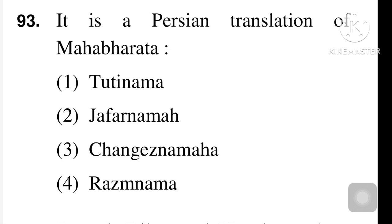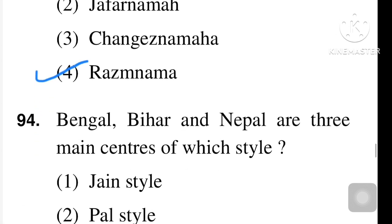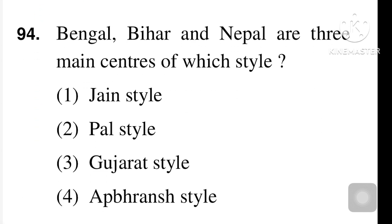Next question: it is a Persian translation of the Mahabharata. Four options on the screen — you can read them. The right answer is Rajmanama, option number four. Next question: Bengal, Bihar, and Nepal are three main centers of which school? Jain style, Pal style, Gujarat style, or Urban style. Option number two, Pal style, is the right answer.